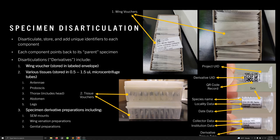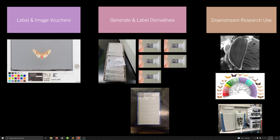The last piece is specimen derivative preparation — things like SEM mounts, wing venation preparations, and genital preparations. Here's an image of an SEM box where SEM stubs would be stored. You can track from what specimen a given SEM prep came, what box it's in, and what slot it's in, so you can find that particular prep quickly and easily if you need to re-image it or share it with another researcher.